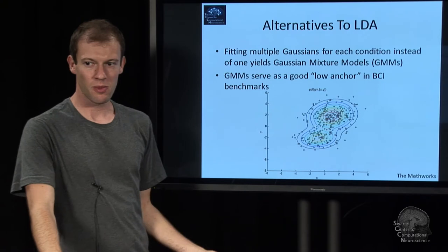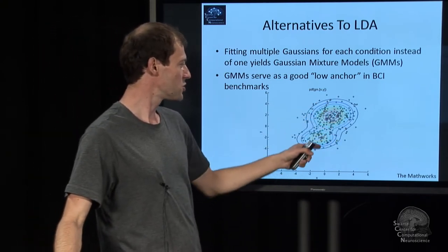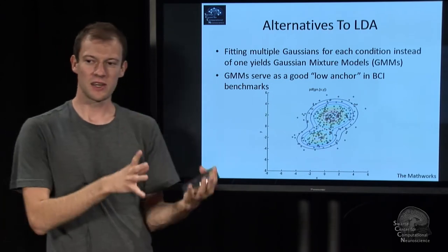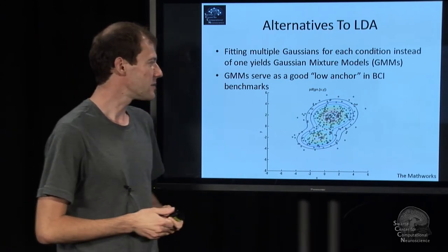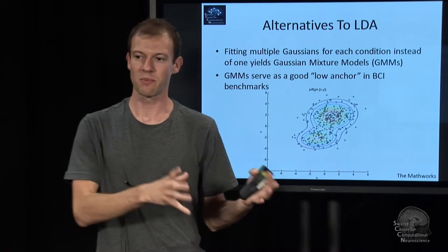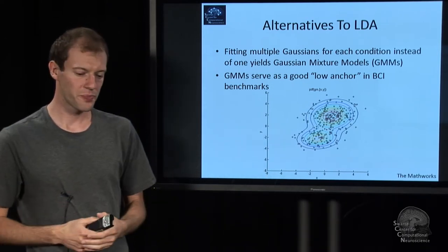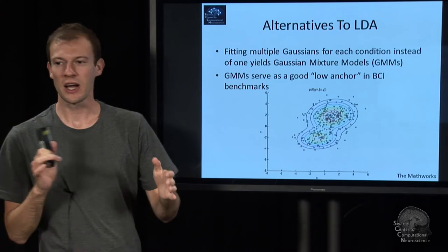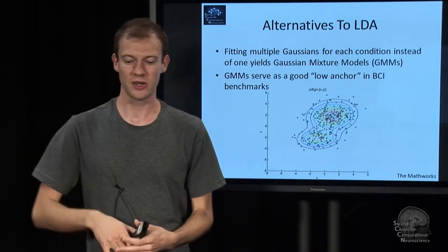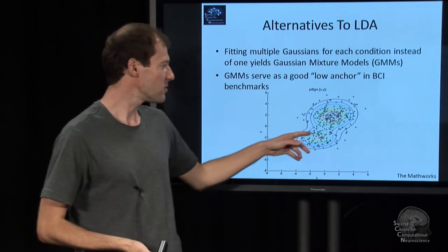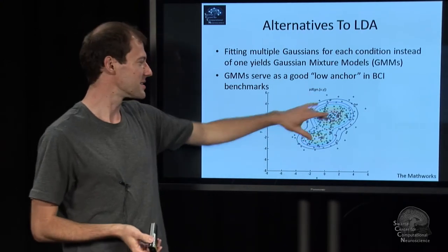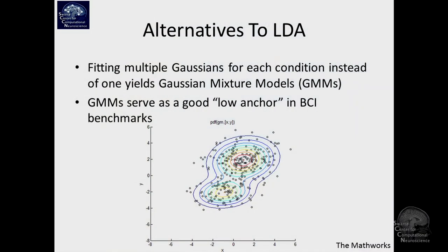You can use Gaussian mixture models, which basically fit Gaussian distributions to multiple blobs in one class. That's particularly relevant if you have a condition that actually consists of sub-conditions — say, a person is making an error and there are three kinds of errors: he presses this button incorrectly, does that incorrectly, and so on. That's probably three different distributions for one class, and GMMs are not too bad for characterizing those. In practice for EEG, they usually don't work that well.